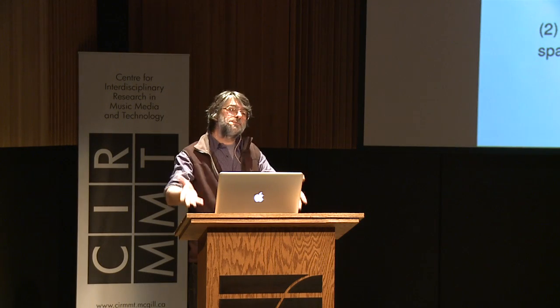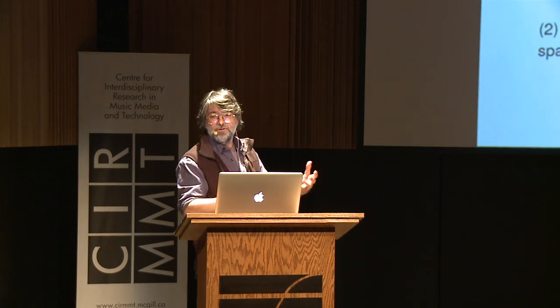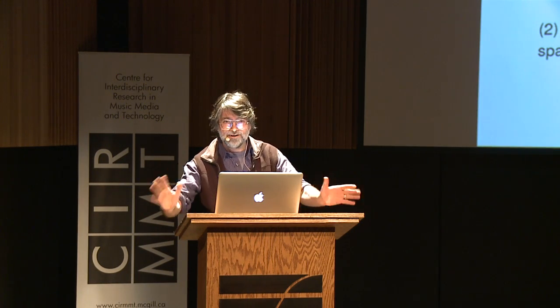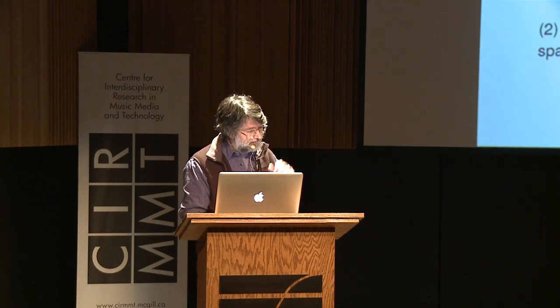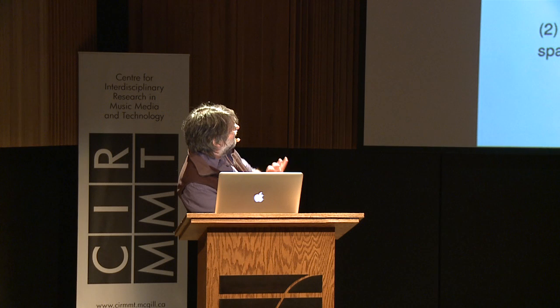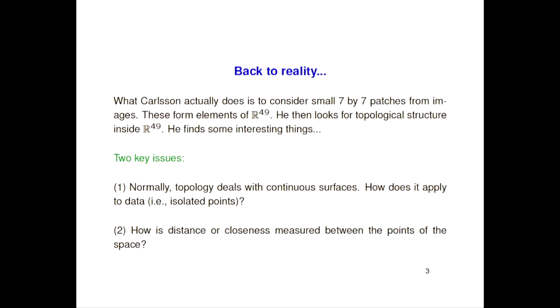What Carlsson actually does is take little pieces from the images — little 7×7 patches. Each 7×7 patch is 49 numbers, so these are in R49. R49 is the kind of size that's small enough to be usable in our computational machines, yet large enough to be interesting. So how are we going to take this idea of translating our data into points which we can then talk about structure?